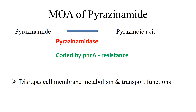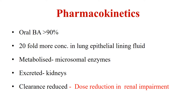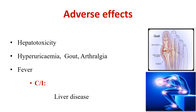Pyrazinamidase is coded by a gene called pncA, so any mutation in this gene leads to resistance against pyrazinamide. The oral bioavailability of pyrazinamide is more than 90%. It is widely distributed in the body and even attains good concentration in the CSF. Pyrazinamide is highly concentrated in the lung epithelial lining fluid and is metabolized by microsomal enzymes and excreted through urine. Dose should be reduced in patients with impaired renal functions. Adverse effects include hepatotoxicity, hyperuricemia, gout, arthralgia, and mild fever. This drug is contraindicated in patients with liver disease.